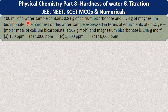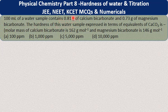Let us take another question. 100 ml of a water sample contains 0.81 gram of calcium bicarbonate and 0.73 gram of magnesium bicarbonate. The hardness of this water sample expressed in terms of calcium carbonate equivalents is how much? The molecular masses of calcium bicarbonate and magnesium bicarbonate are also given, and you have to choose the correct answer.